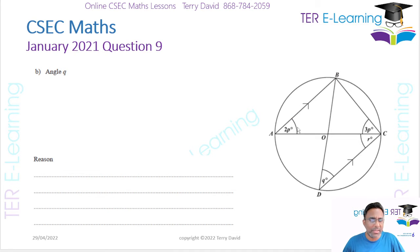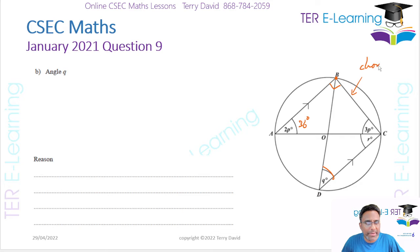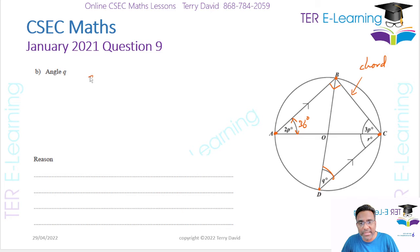The next part wants angle q. We know this angle is 36 degrees and this one is 90. Now, BC is a chord. If we use the ends of the chord to make an angle on the circumference we get 36 degrees. Using the same points B and C to make another angle on the circumference, that angle must also be 36 degrees — no calculation needed. Q equals 36 degrees because angles in the same segment are equal.